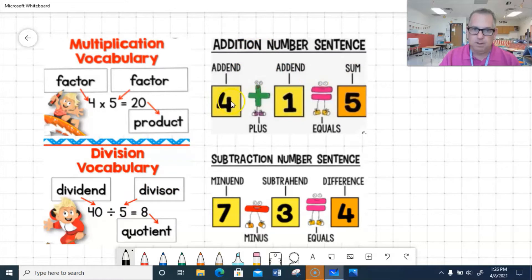Addition vocabulary. You got addend, addend, and the sum is the answer to addition problem. And I can switch. There's a commutative property of addition, just like commutative property of multiplication. I can switch the numbers around. I can say 1 plus 4 equals 5. Still a true statement.